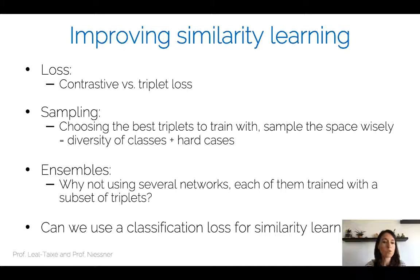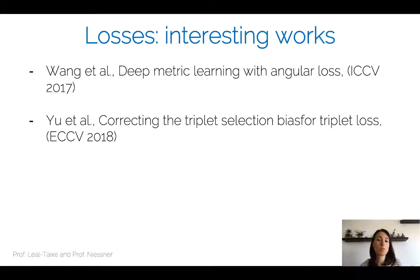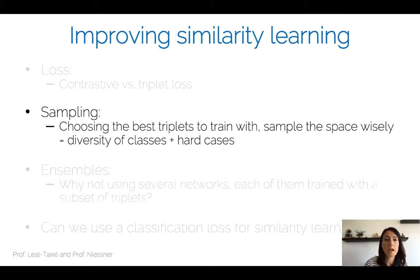We will not further discuss different loss formulations, but we recommend reading two papers: one on angular loss and one on correcting the triplet selection bias, both of which deal with defining better losses for similarity learning.